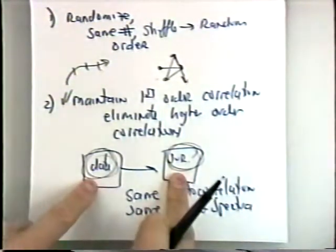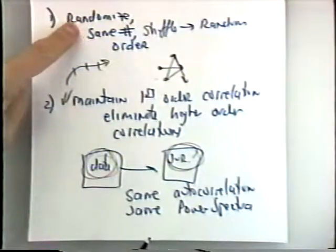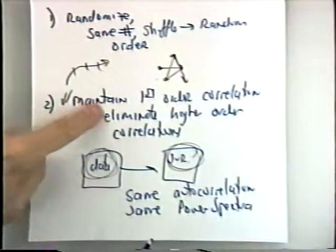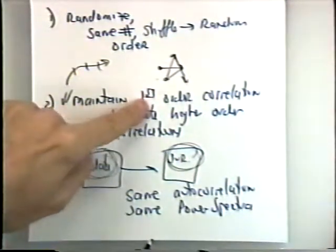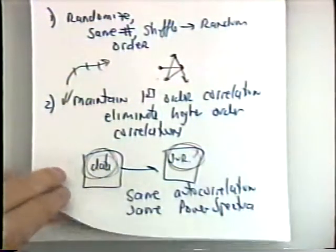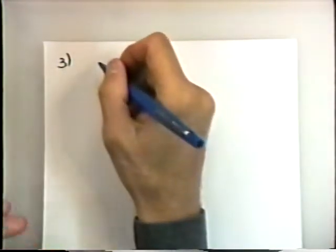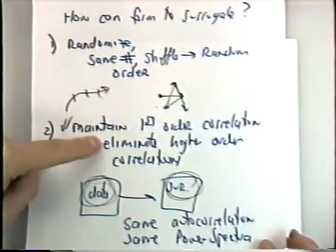So you would do the analysis on the data and on this particular surrogate, and then see whether they're the same or they're different. The idea was that randomizing mixes up things too much, and the phase-randomization mixes things up a little less. There was an article from a researcher in India about a year ago in Physical Review that said that this surrogate, by maintaining the first-order correlations, was actually not a good surrogate.